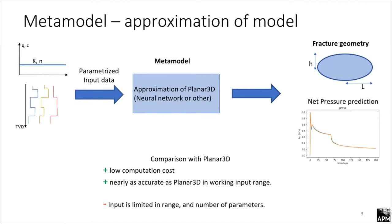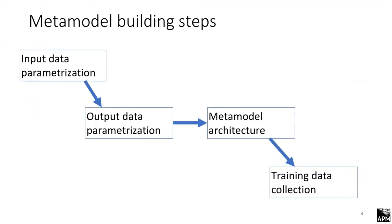For example, if the metamodel is trained to predict fracture growing in a three-layer medium, it won't be able to simulate other types of media. To build the metamodel, following steps must be performed. First, input data should be parameterized. Then output data parameterization should be performed. Then we must choose metamodel architecture and collect data for training the metamodel.